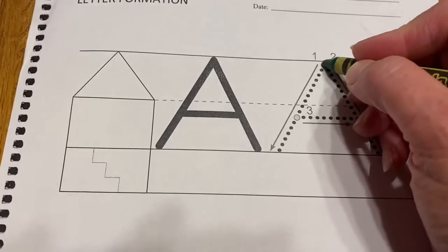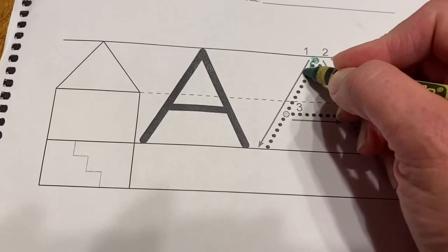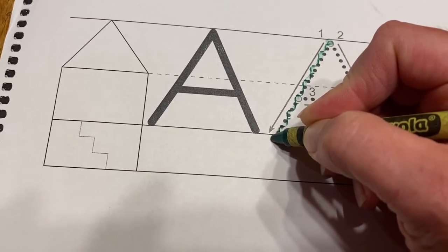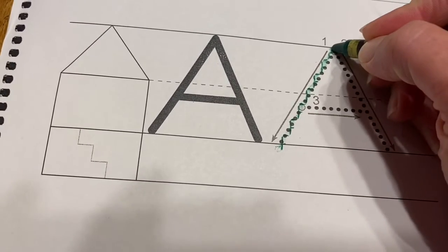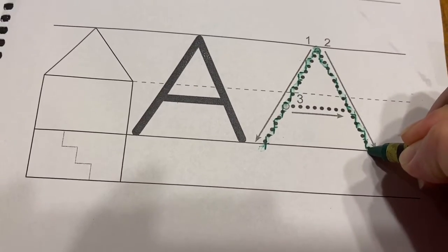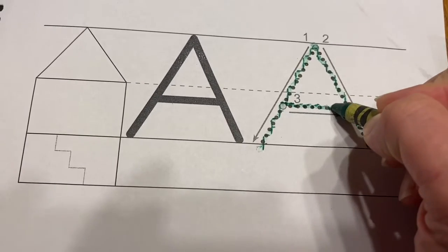You're going to start at the top line and you're going to do a diagonal down to the bottom line. You're going to go back to the top and do a diagonal line the other way to the bottom. And your last line is a line across.